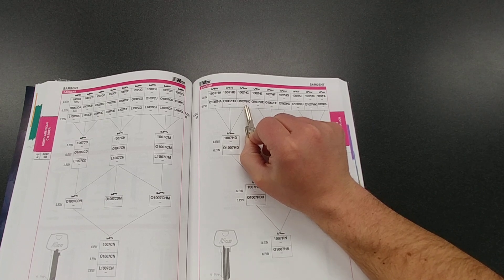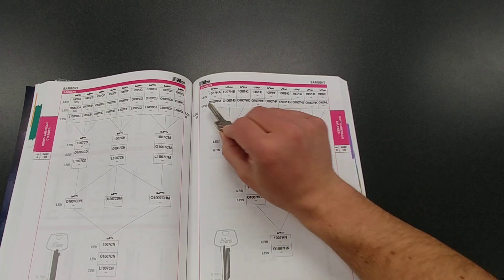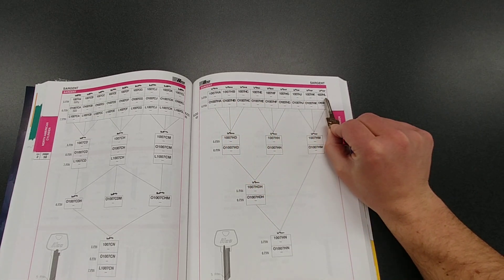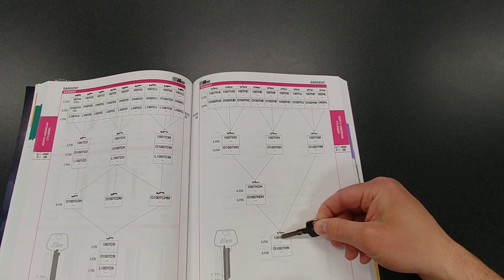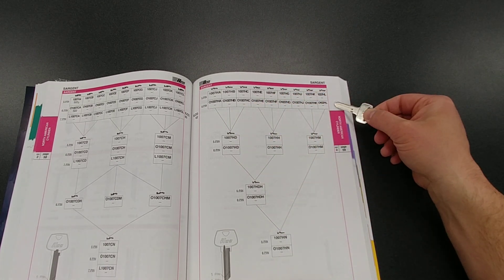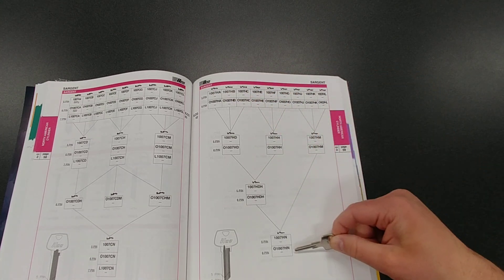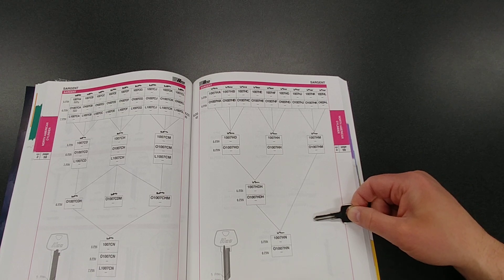The other reason is sometimes if you get some oddball keys in and you can't afford to stock all these different keyway profiles, you can always step down and just stock the master key knowing that it's going to work for all of those. So that's two great reasons to look at these charts and see how they can help your business.